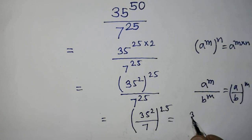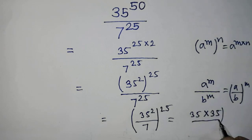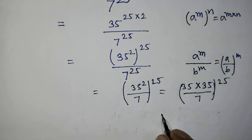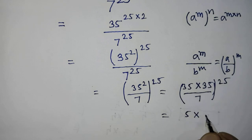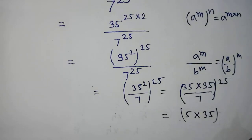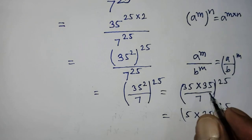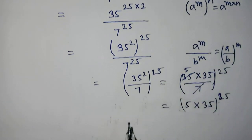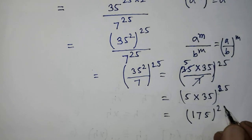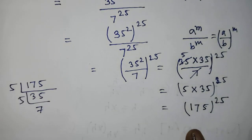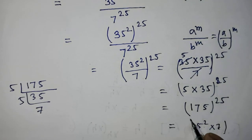After that, it will be 35 times 35 over 7, whole to the power 25. After that, it will be 5 times 35, whole to the power 25. After that, it will be 5 to the power 2 times 7, whole to the power 25.